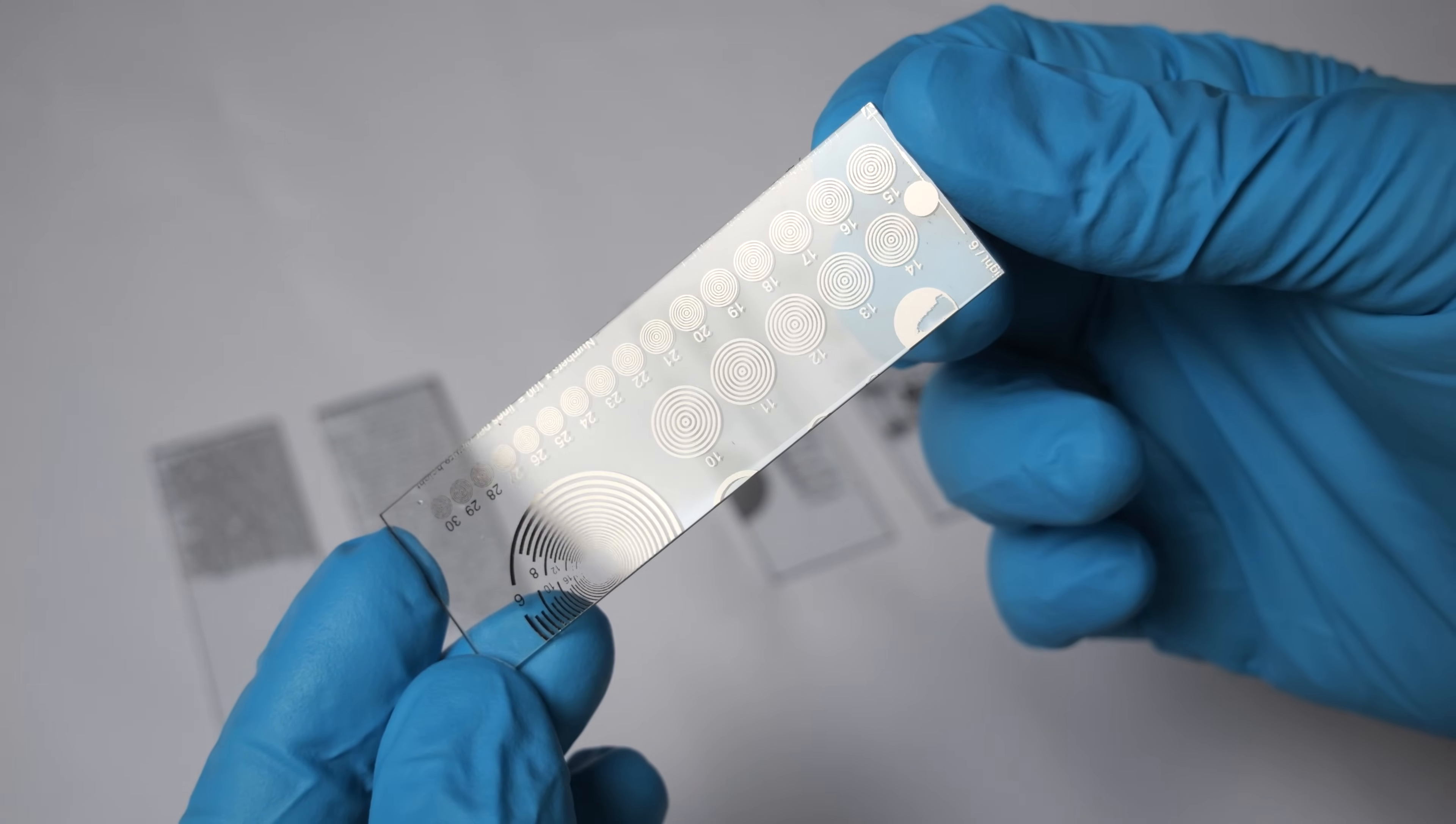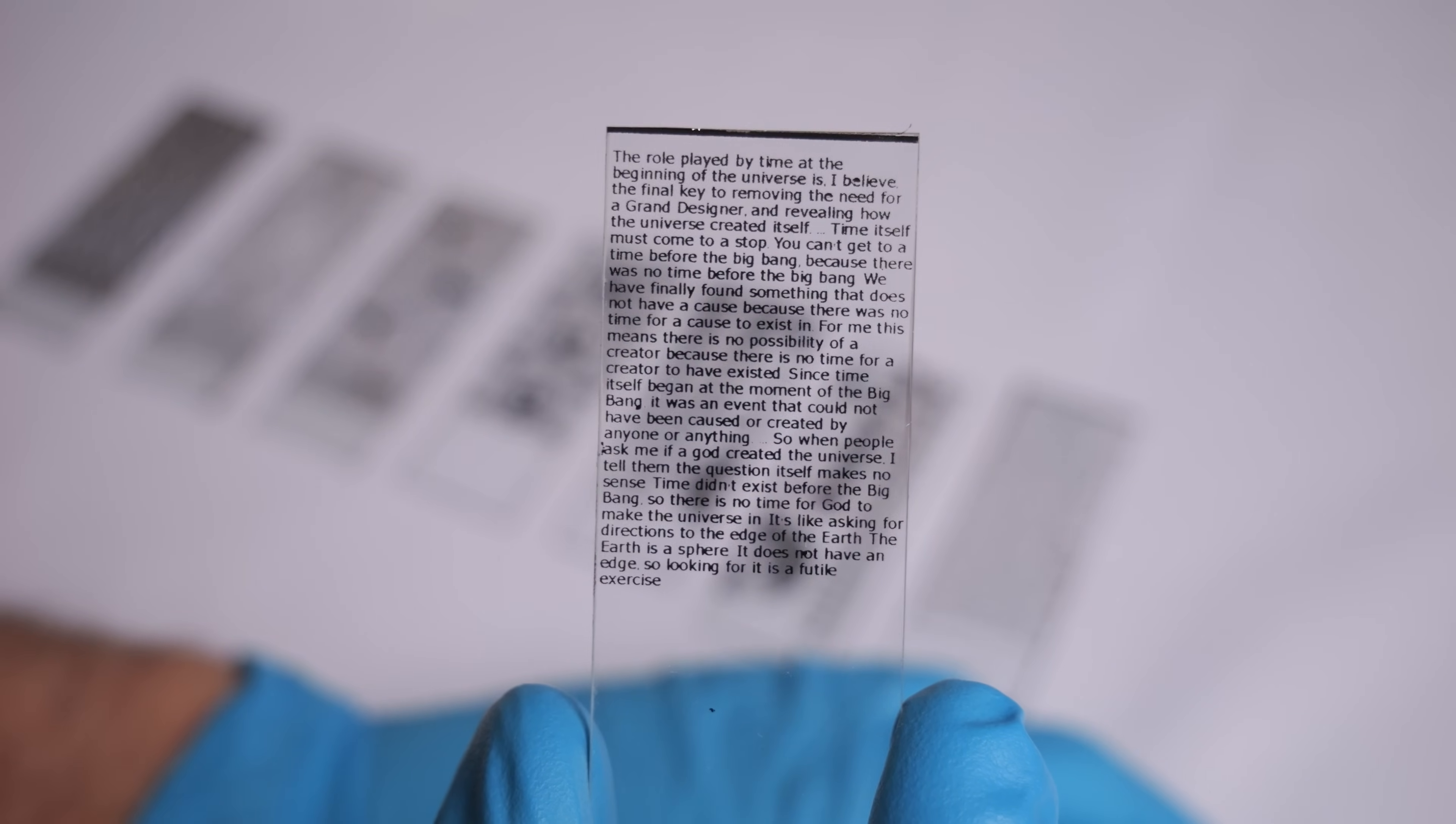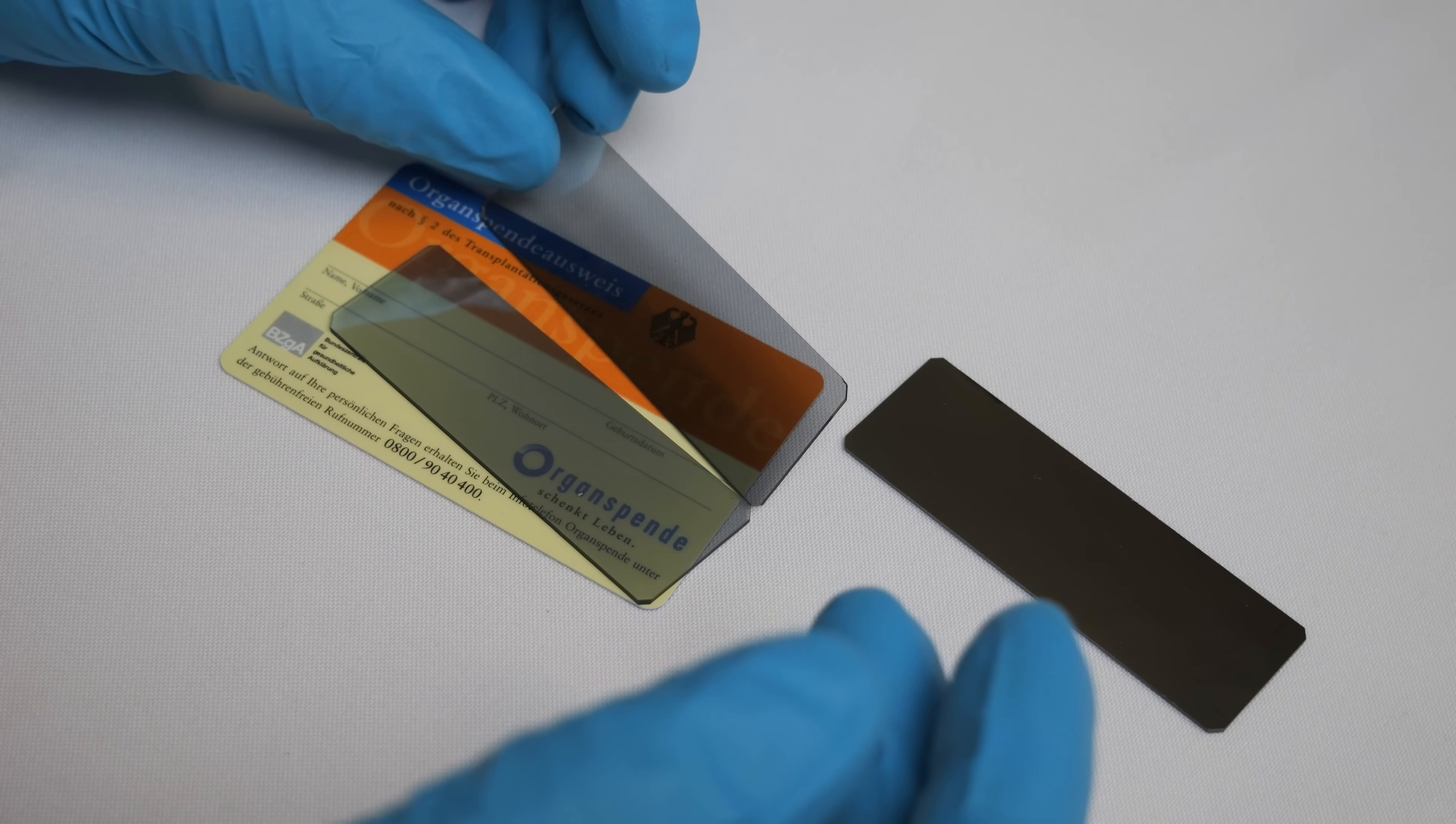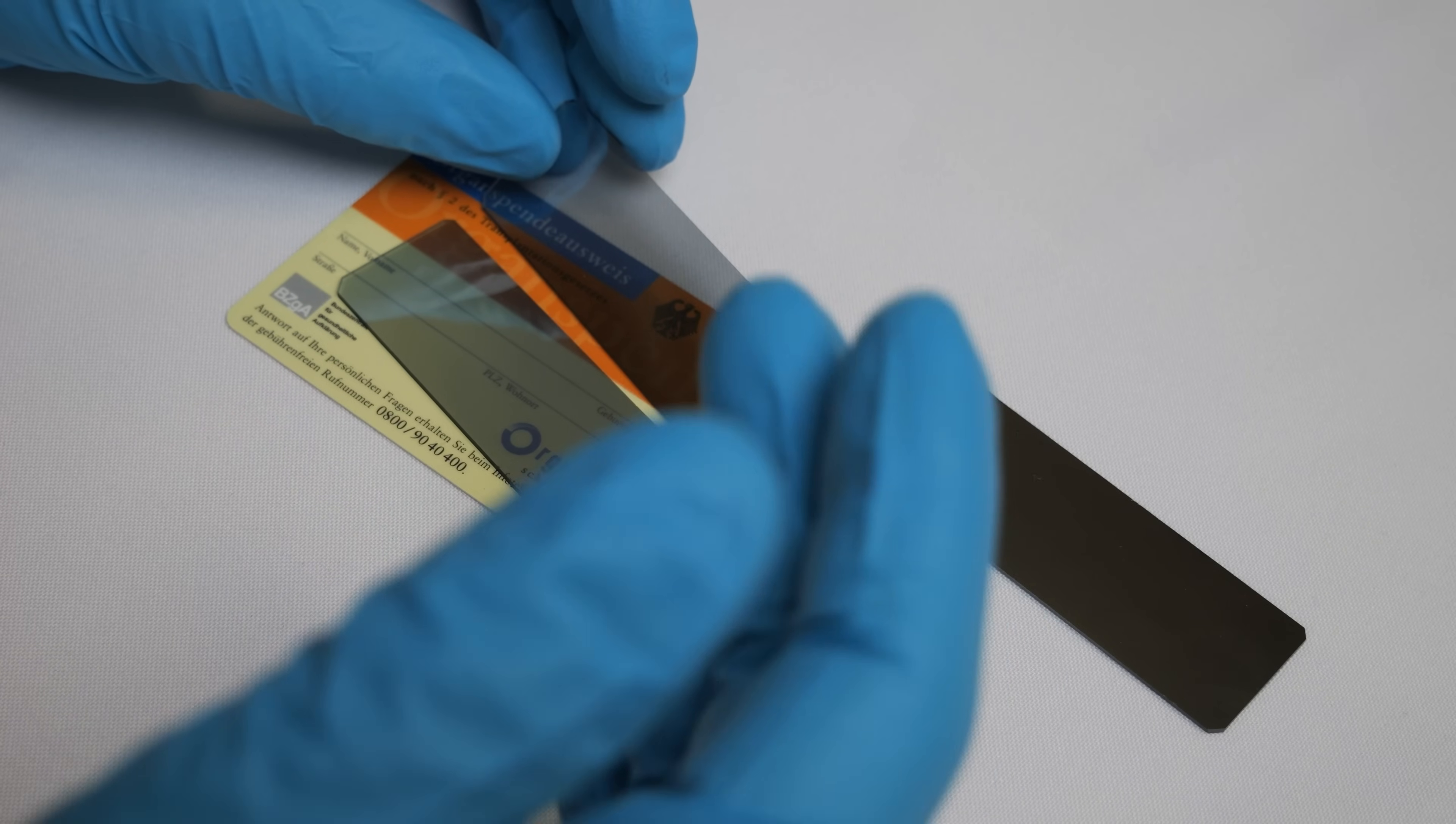In today's video I will show you how I created these intricate patterns and text in titanium on glass. To deposit the titanium I will be using the sputtering setup I built in a previous video. However, simply placing a slide over the magnetron would just yield a mirror. This means I need a method to prevent the titanium from reaching certain areas of the glass.